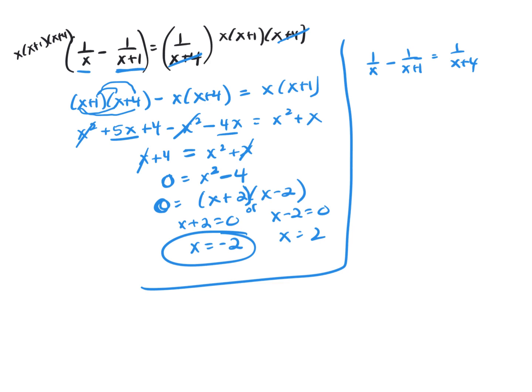Now, you can eliminate answer a because you can't let x be 0. You can't have 0 on the denominator. And x can't be b. It can't be negative 1 because if you plug negative 1 in here, you get 0 on the bottom. And it can't be e because x can't be negative 4. So try answer c, which is negative 2.